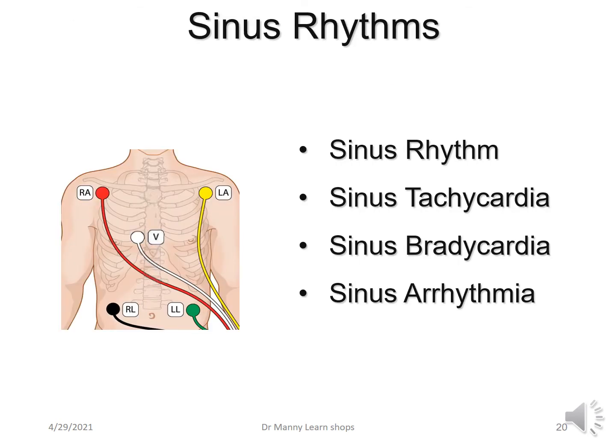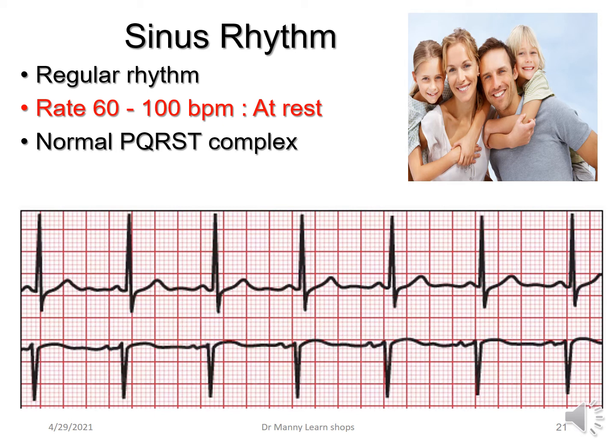Now let's review sinus rhythms. We'll look at normal sinus rhythm, sinus tachycardia, sinus bradycardia and sinus arrhythmia. Sinus rhythm is a regular rhythm at a rate between 60 and 100 beats per minute at rest, and it has a normal PQRST complex, which you can review in the criteria from the previous learn shop.